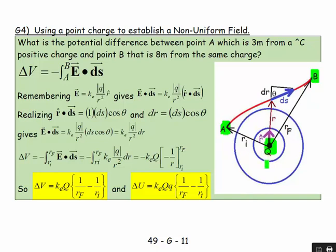The distance between the point charge and A is ri, and the distance between the point charge and B is rf. We imagine a point at a certain distance r from the point charge, in a direction given by r̂, and there's an angle θ between the direction of r̂ and this little bit of length ds.